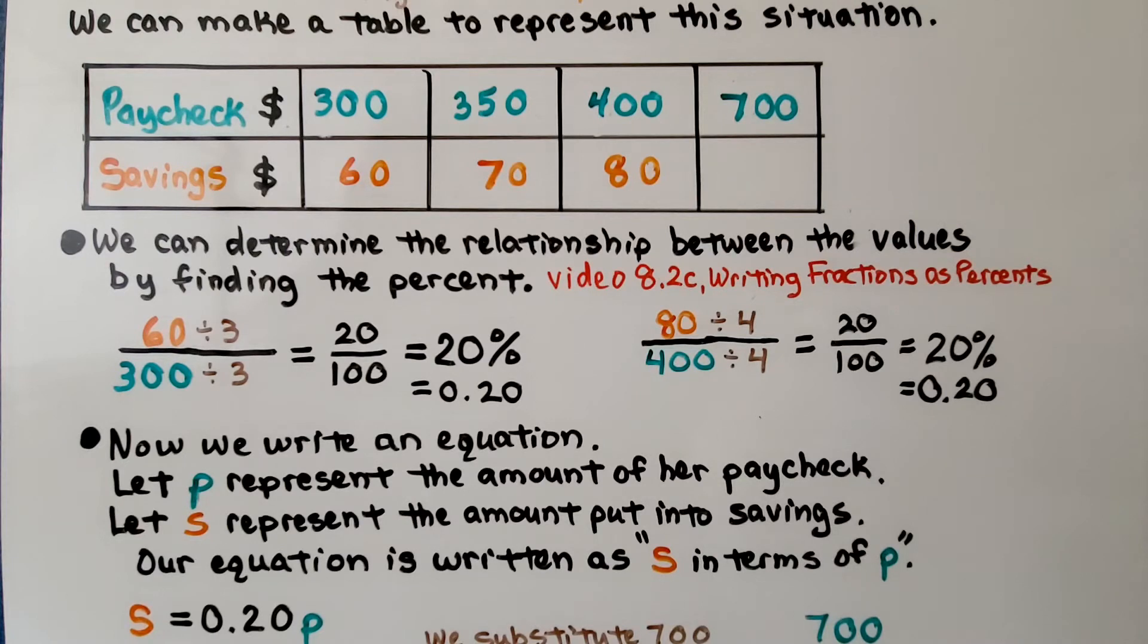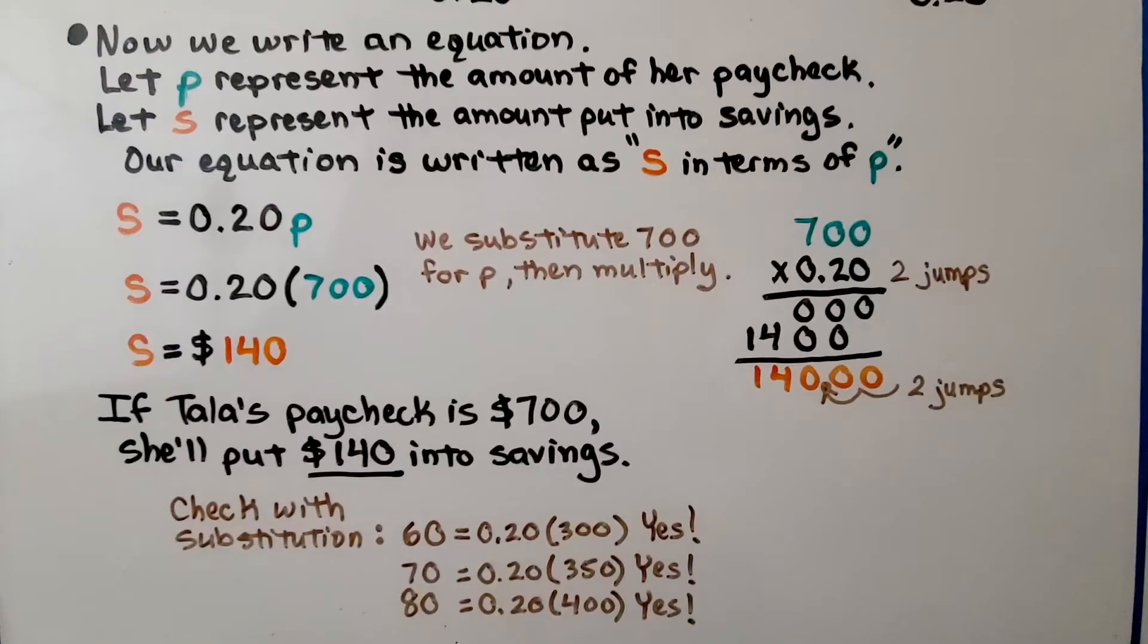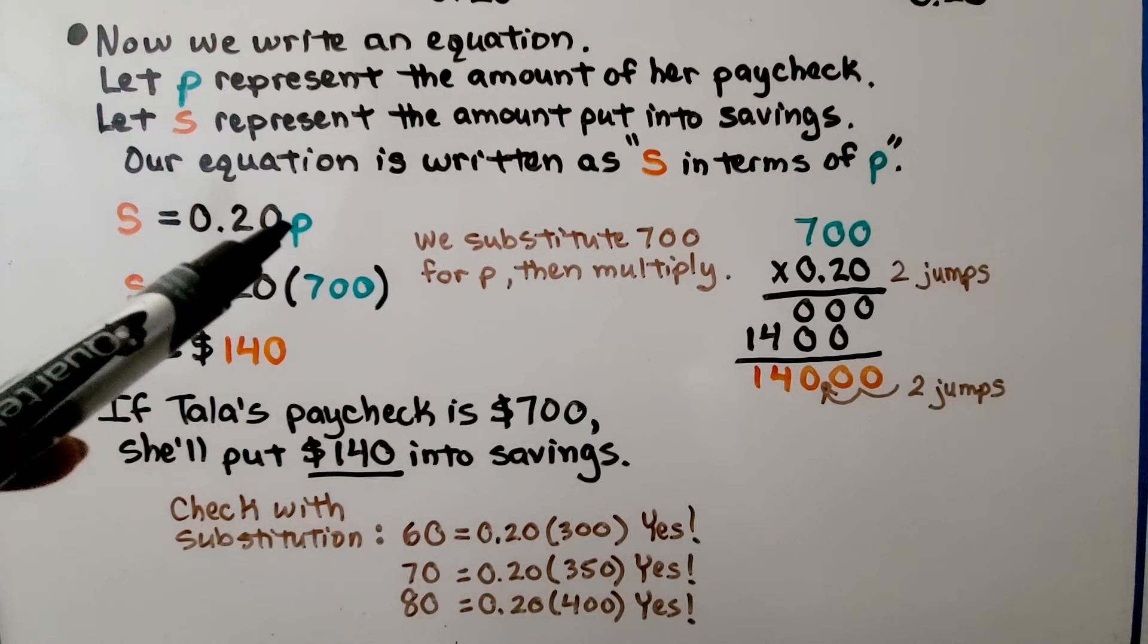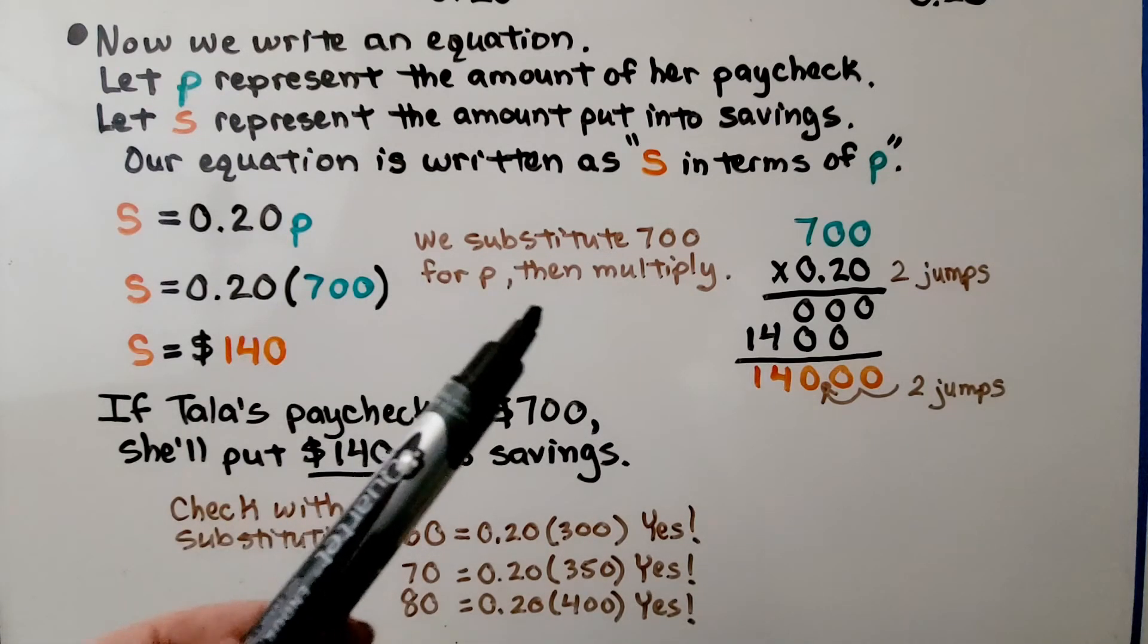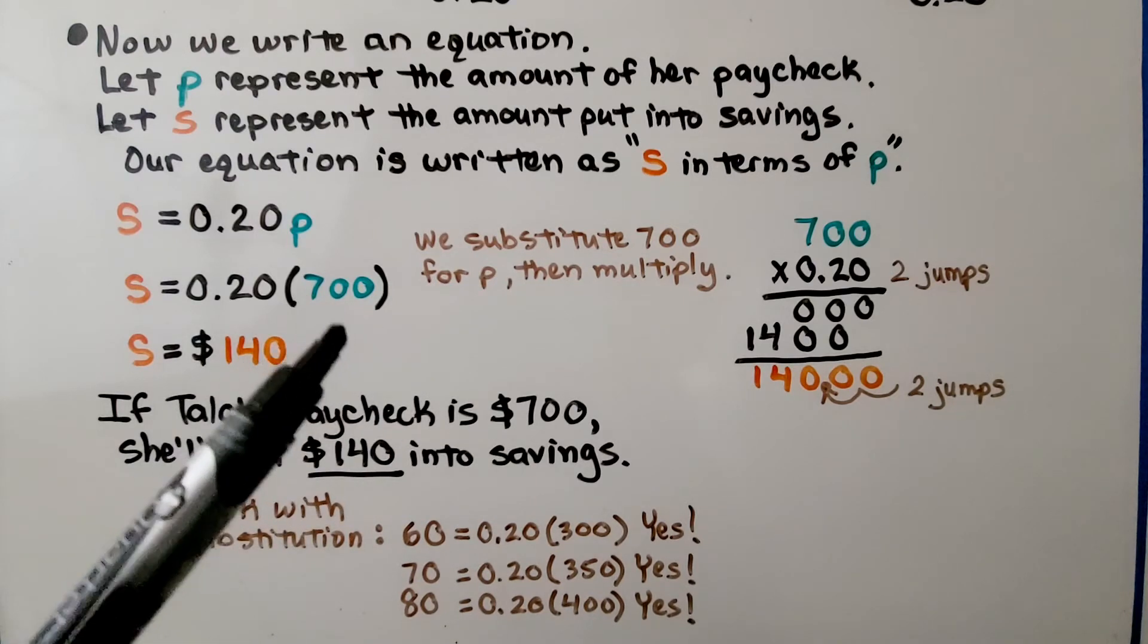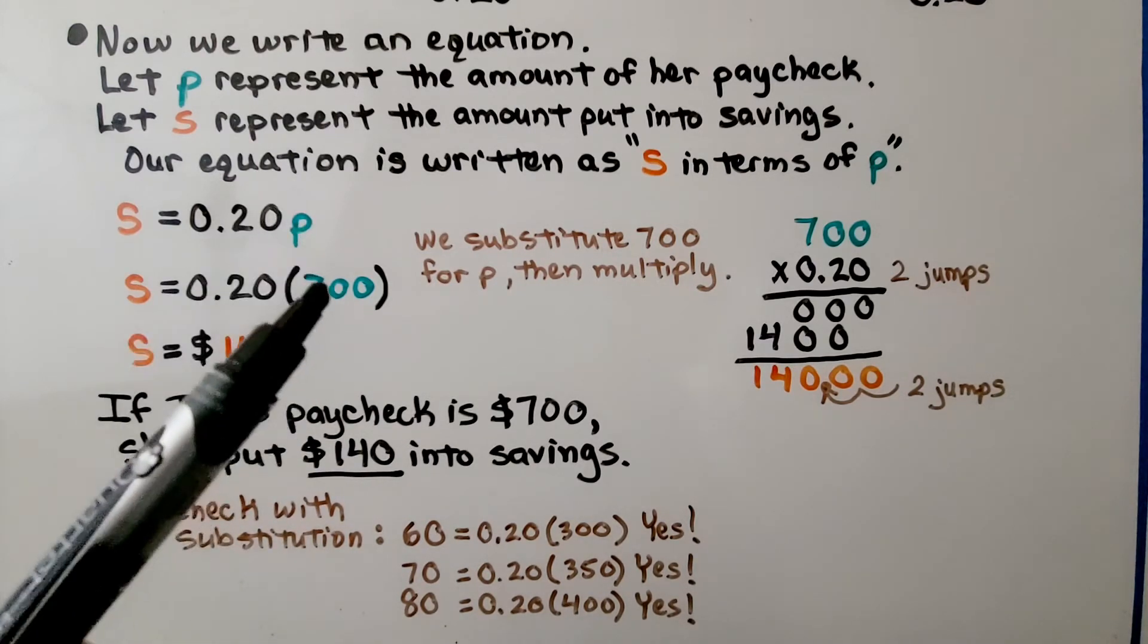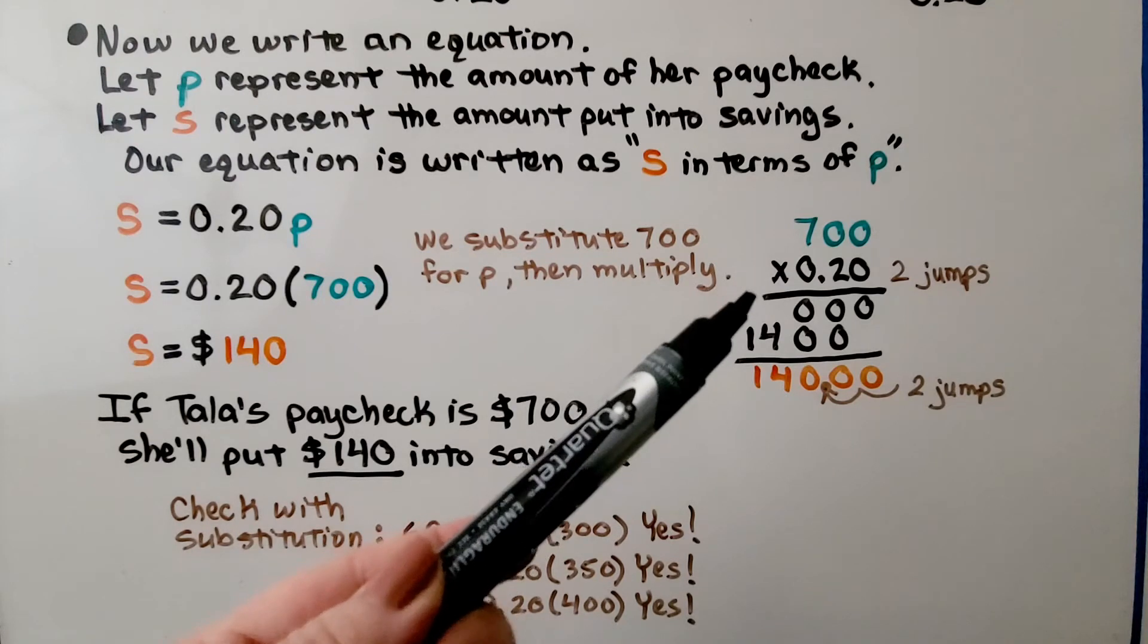Now we write an equation. We let P represent the amount of the paycheck and S represent the amount put into savings. So our equation is written as S in terms of P. Her savings equals 0.20 times P, the paycheck. We need to find how much she's going to put in savings if her paycheck was 700, so we substitute 700 for P and then multiply.